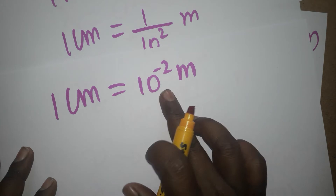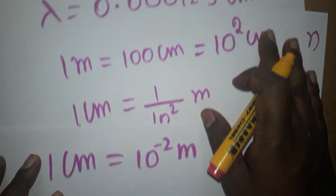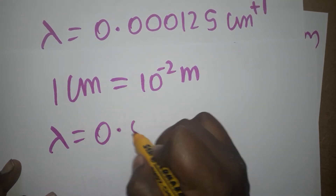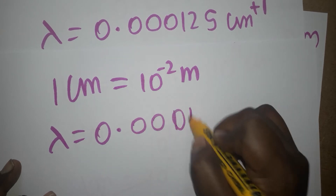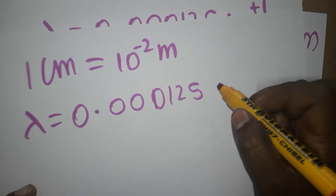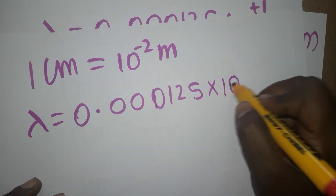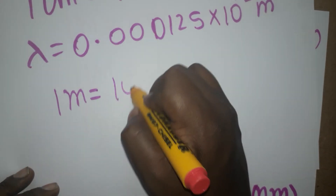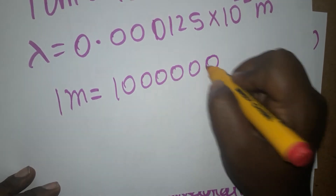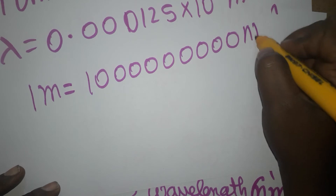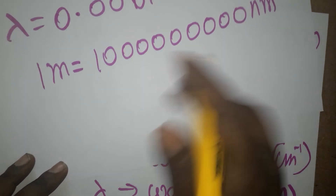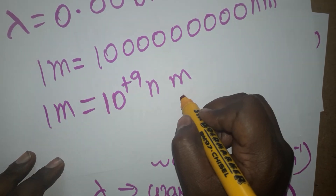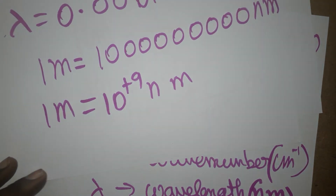So we have 1 centimeter = 10⁻² meter. We have centimeter in our expression, so we convert it to meters: wavelength = 0.000125 × 10⁻² meter. Now, 1 meter equals 10⁹ nanometers, so 1 meter = 10⁹ nanometer.